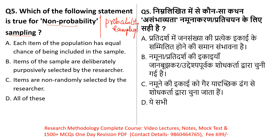In non-probability sampling, researchers can select population members based on their own judgment and convenience. The question asks which statement is correct about non-probability sampling. Option A: 'Each item of population has an equal chance of being included in the sample' — No, in non-probability sampling, selection is non-random. Not every member has an equal chance. This option is related to probability sampling, not non-probability sampling, so it is incorrect.